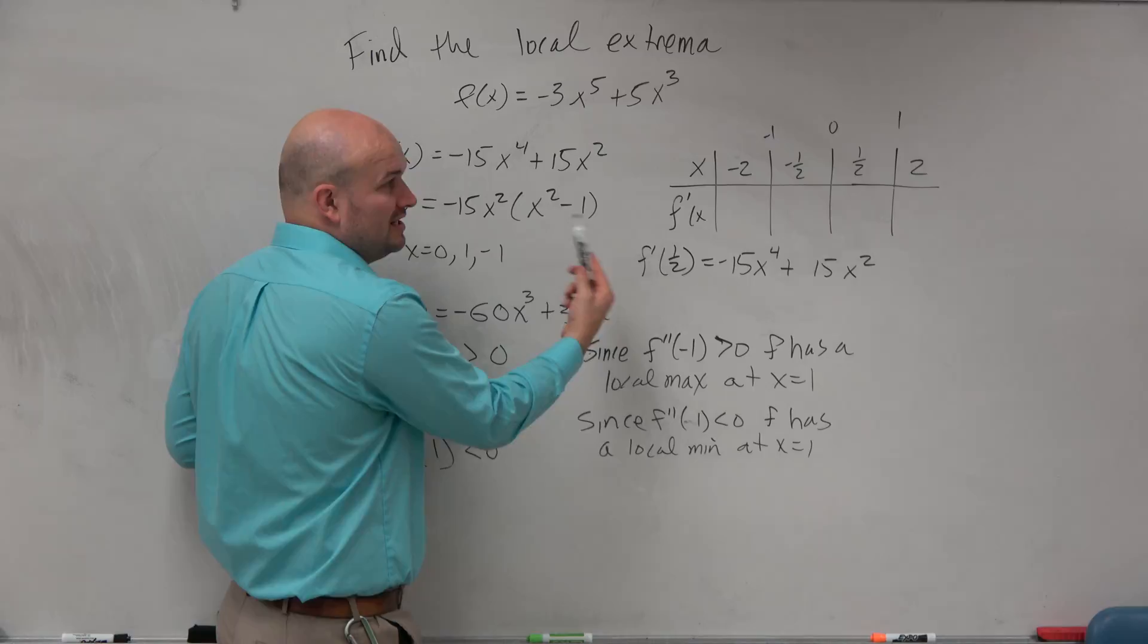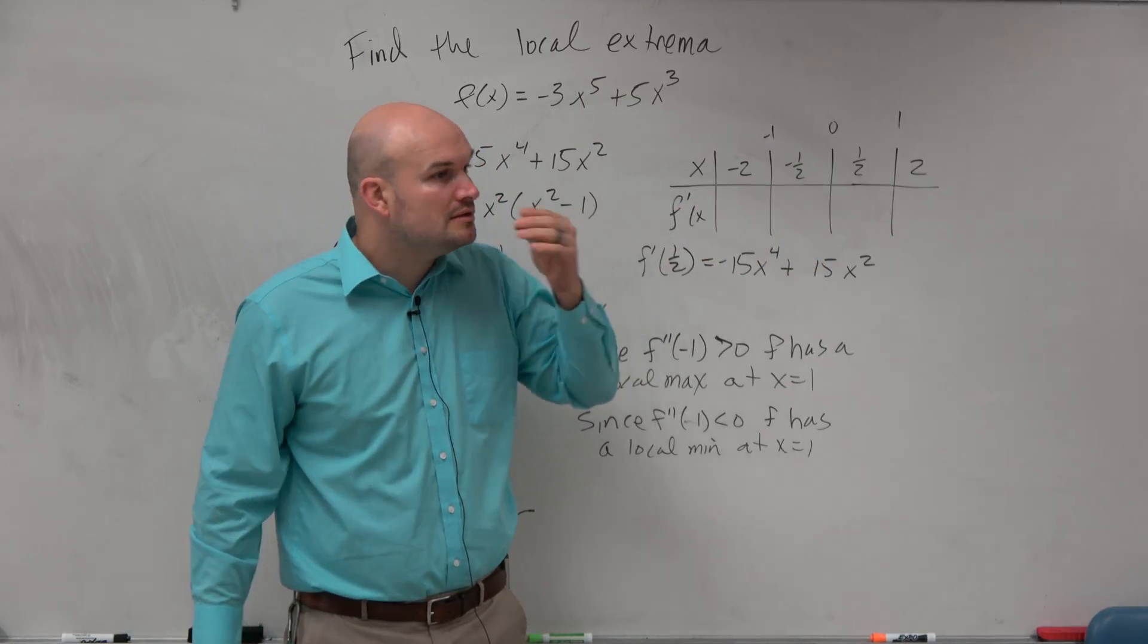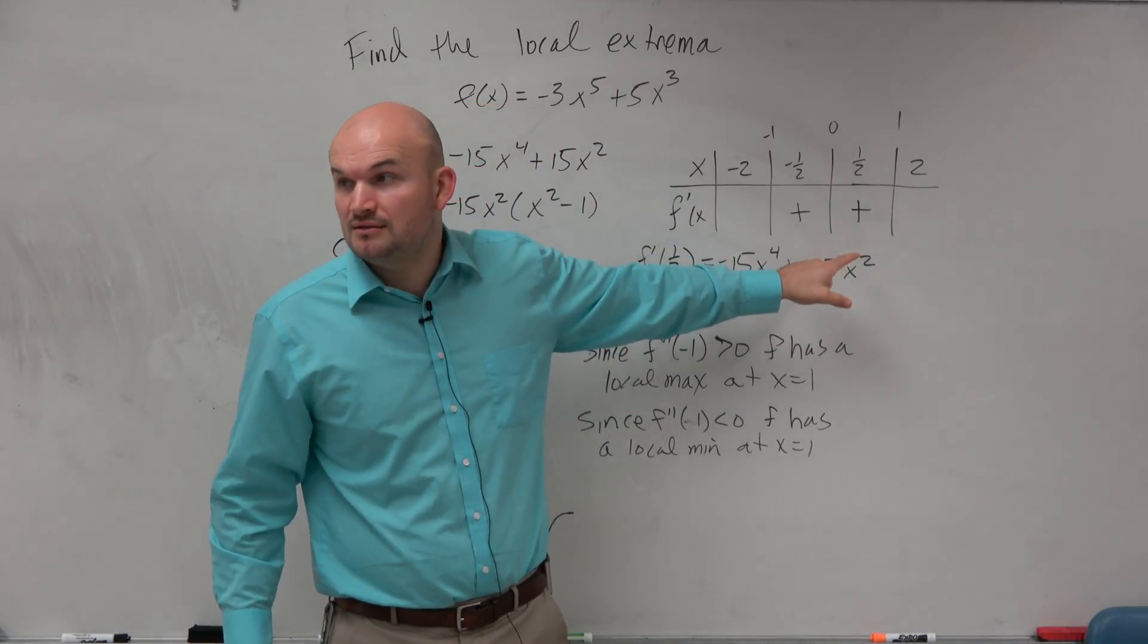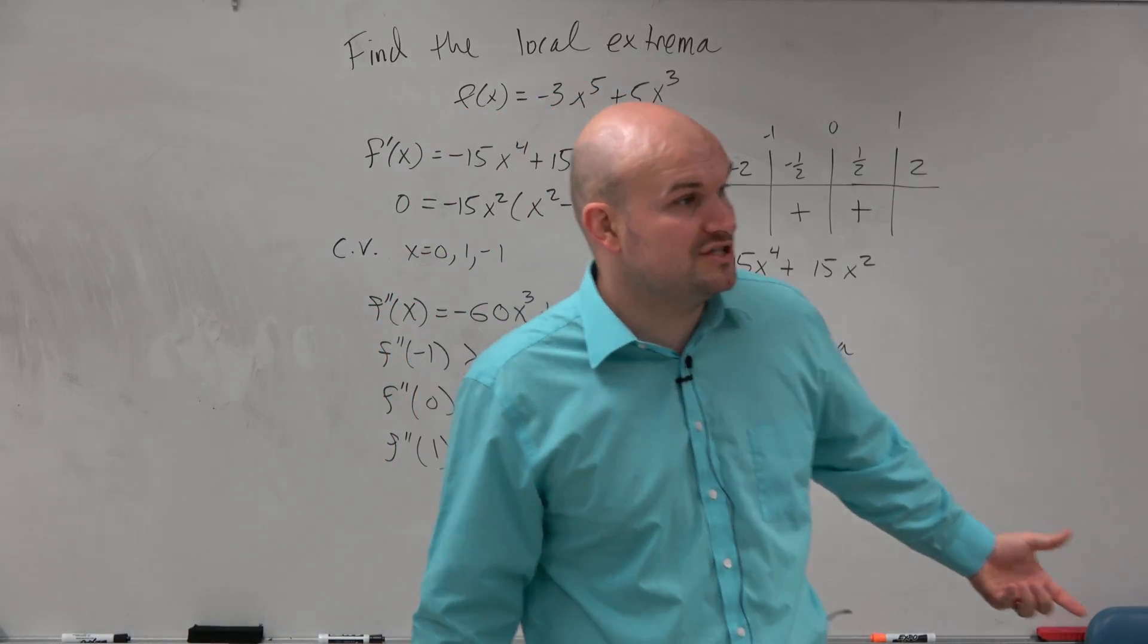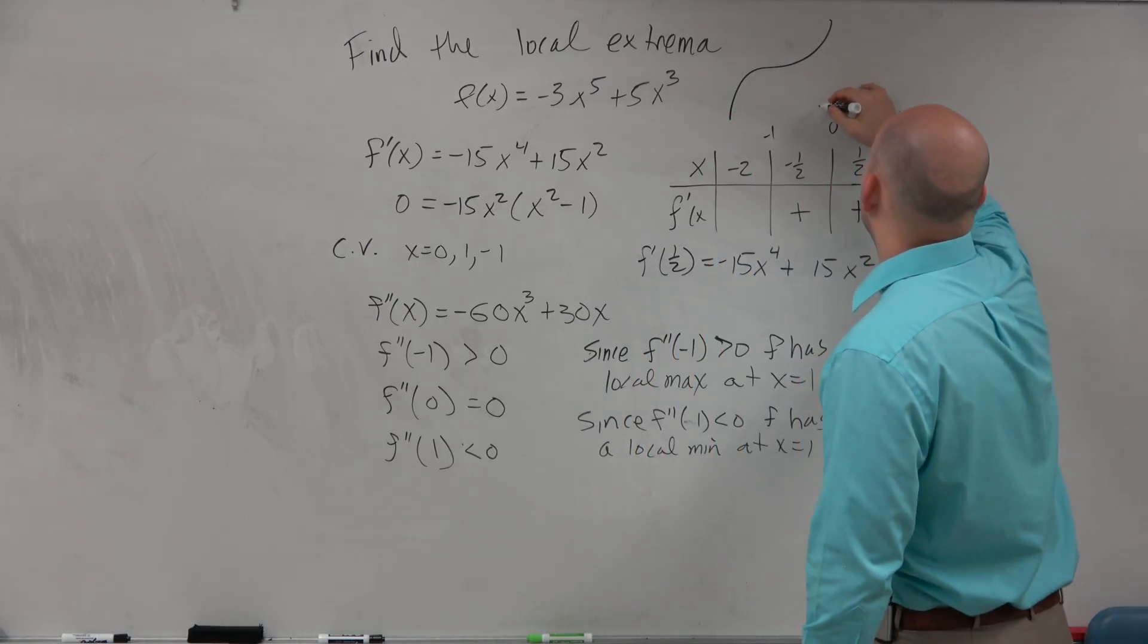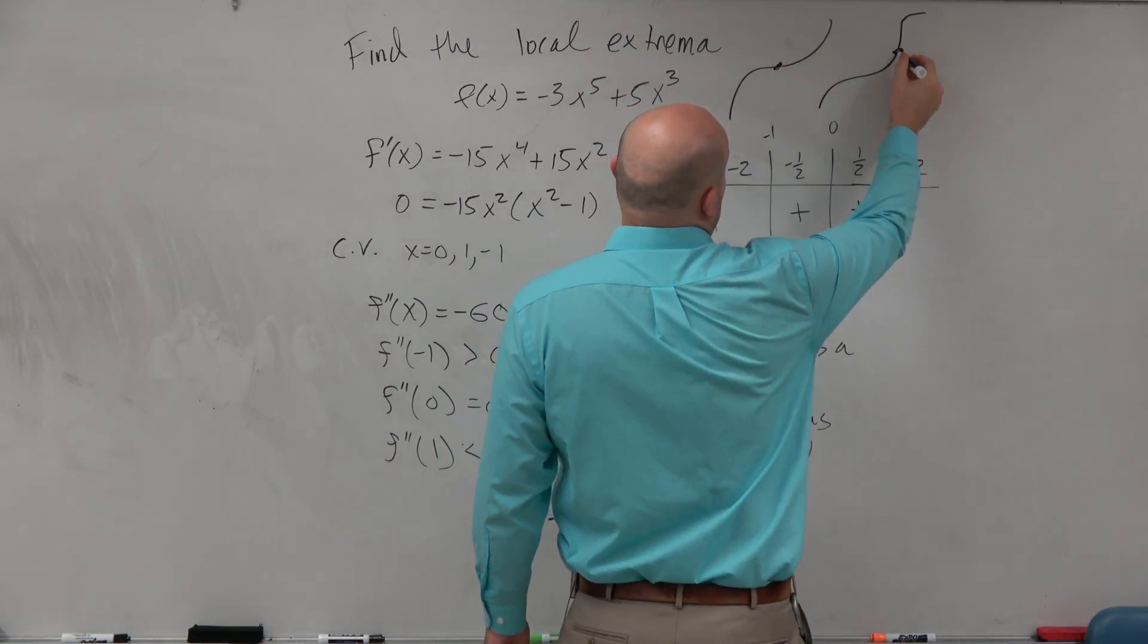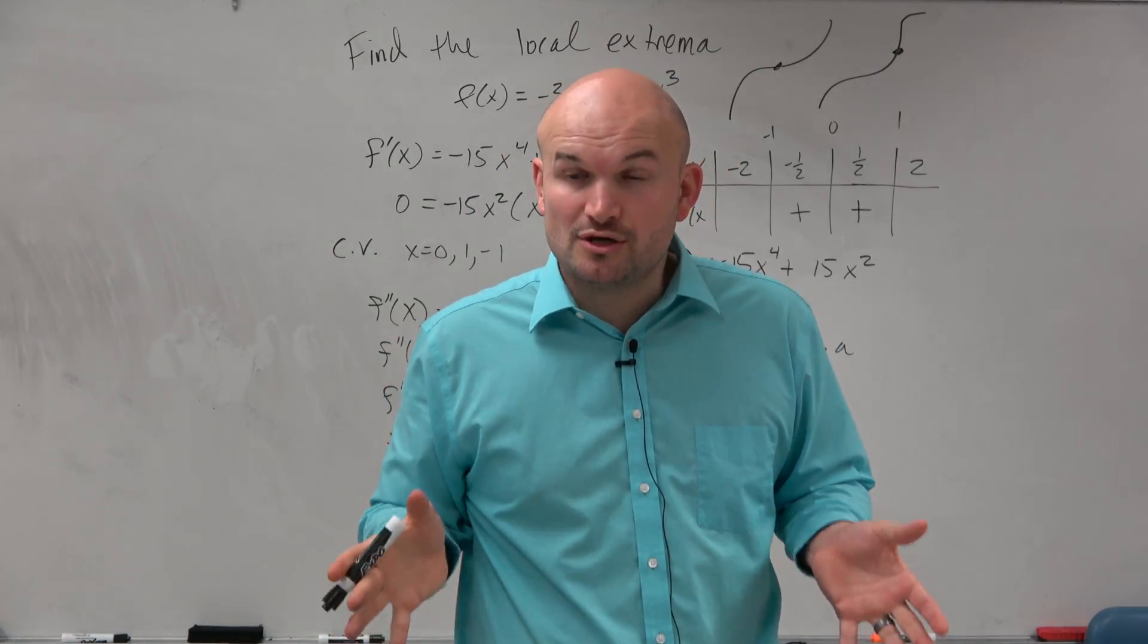So we have to see if the signs are changing at f of negative 1 half. Did anybody plug in f of negative 1 half into the first derivative? It's positive. And the next one's positive. And the next one's positive. So if we were only doing the first derivative test, we would know that no extrema occurs here. It could be a vertical tangent or a horizontal tangent. But it's not an extrema. It's not changing from positive to negative. So at 0, there is no relative extrema.